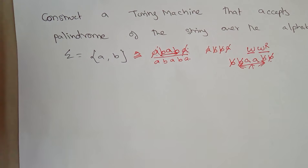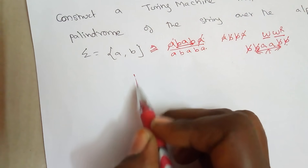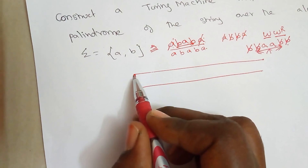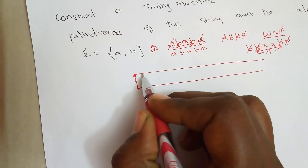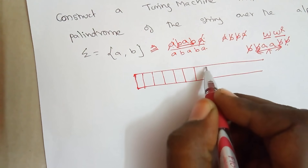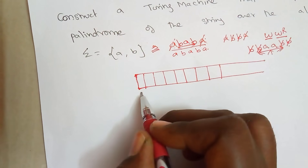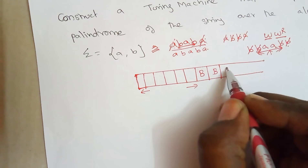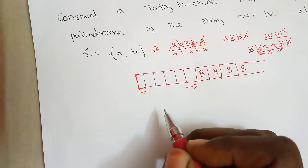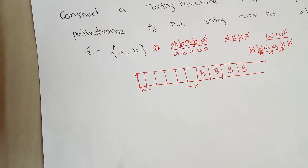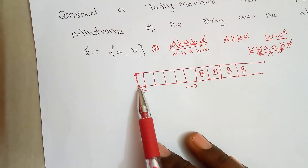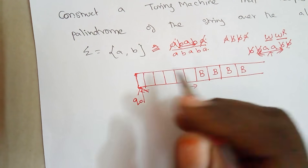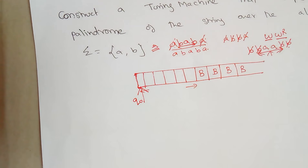This recursive process continues until the last element remaining is handled. As per the Turing machine setup, it has an infinite tape as memory. The leftmost end is sealed and the tape is split into small cells, each capable of storing one alphabet at a time. The input is written from left to right, and the remaining portion of the tape uses a blank symbol B to represent blank spaces.